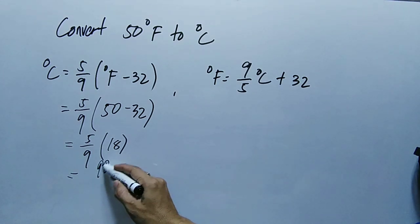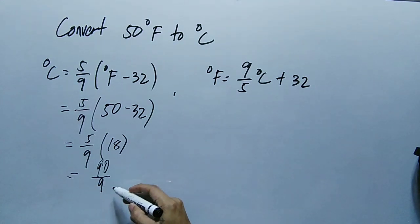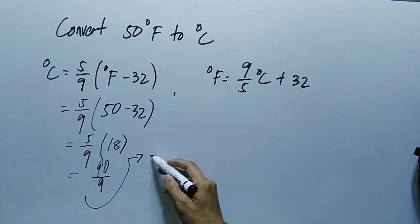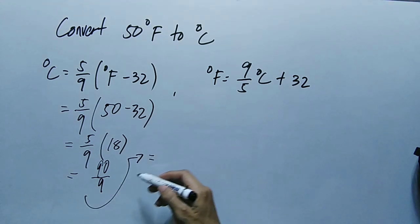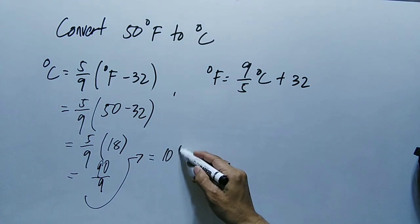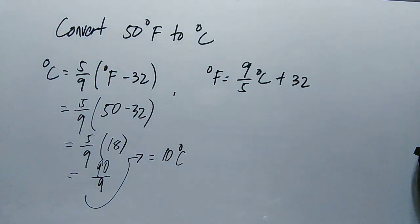So 90 divided by 9, that is equal to 10 degree Celsius.